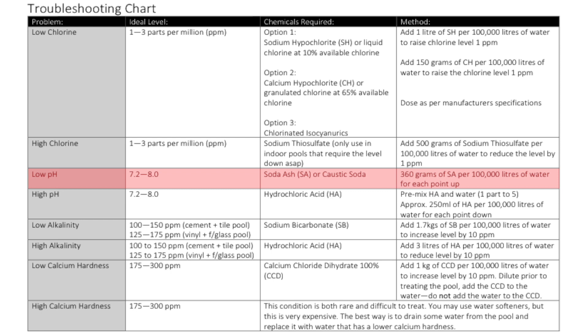To increase the pH using soda ash, we'll use 360 grams of soda ash per 100,000 litres of water for each point that it has to come up.